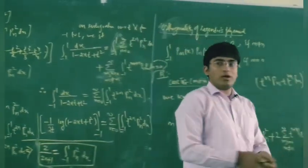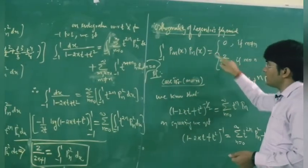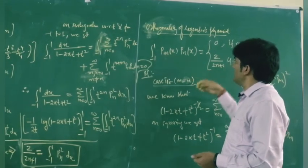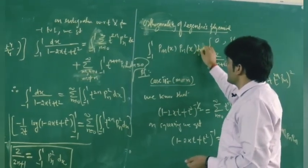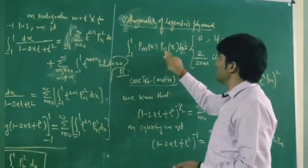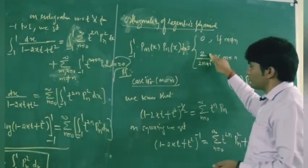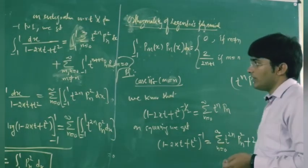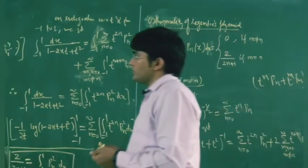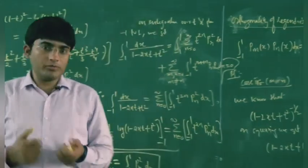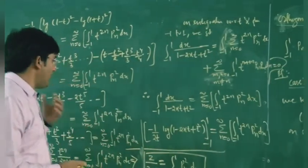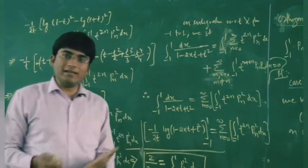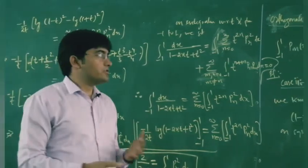So whenever m is equal to n, the integral from minus 1 to 1 of P_n²(x) dx is equal to 2/(2n+1). With the help of this integral, we can solve many questions based on Legendre polynomials.